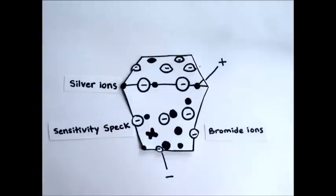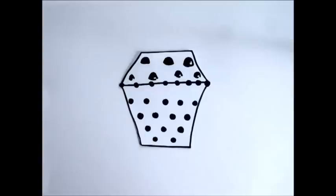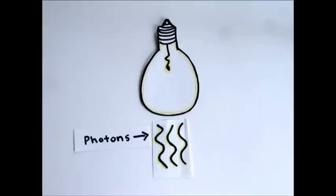In addition to these two ions, there are sensitivity specks in the crystal. These irregularly shaped objects or imperfections are essential to the image forming process. If a crystal was a perfect structure lacking any irregularities, it would not react to light.